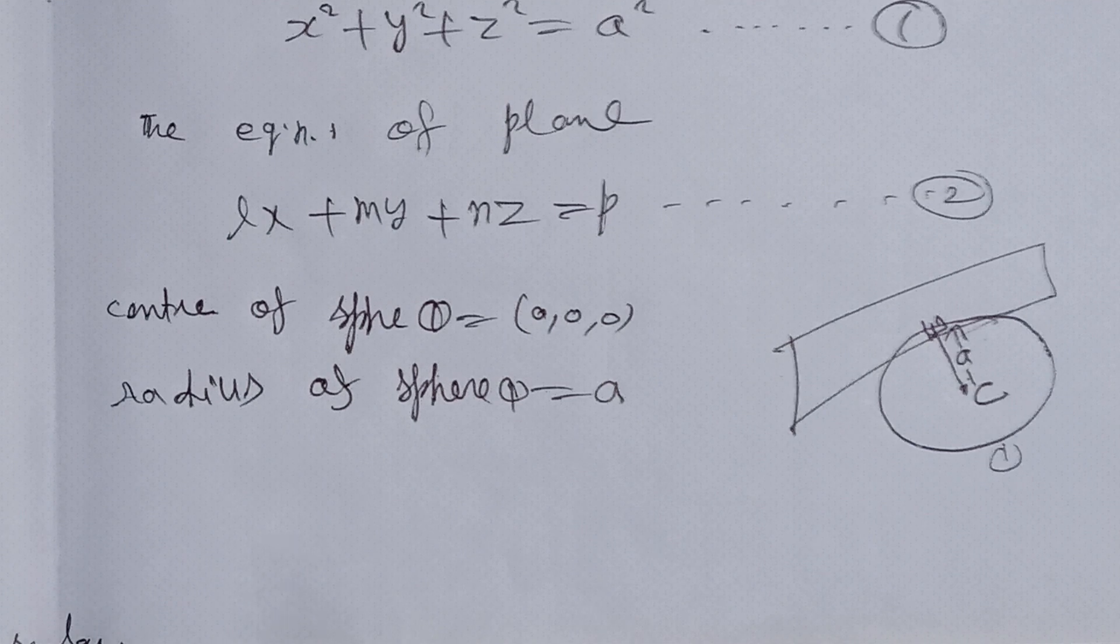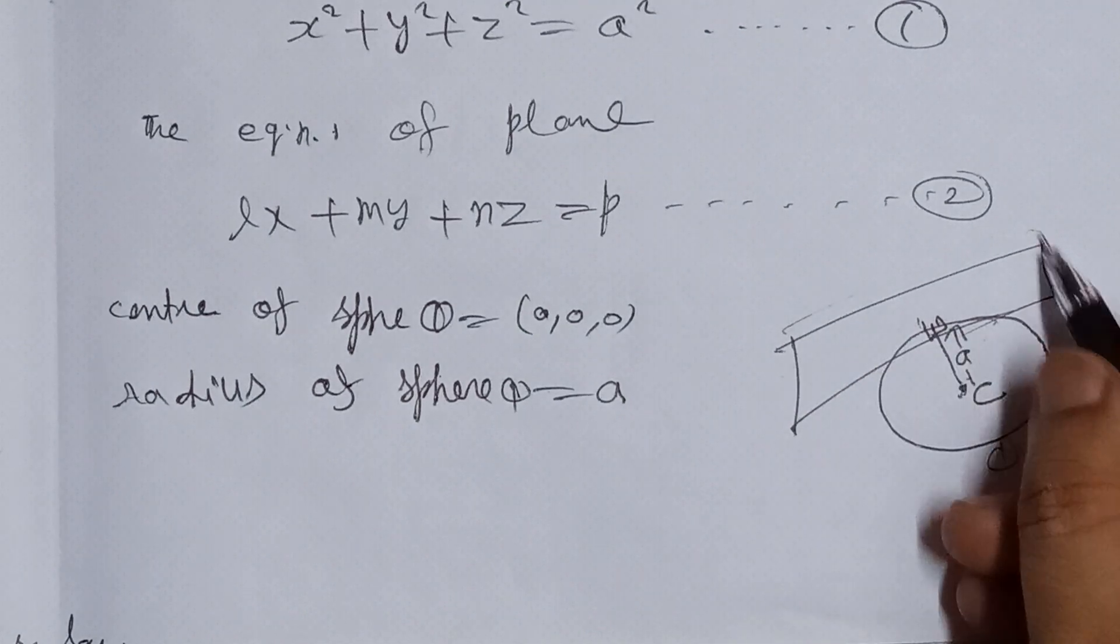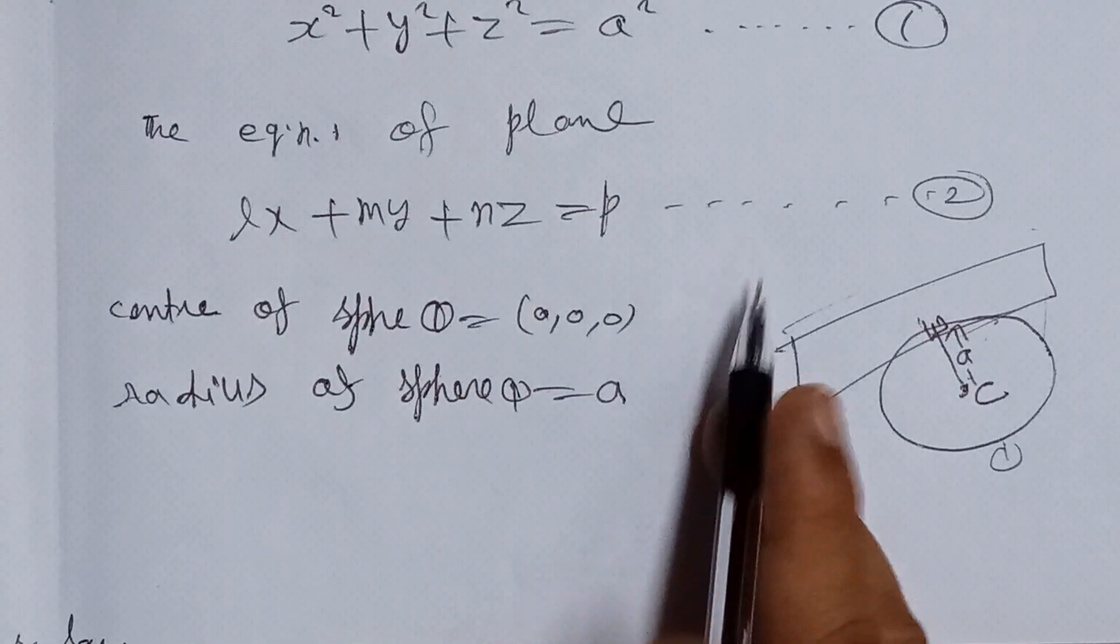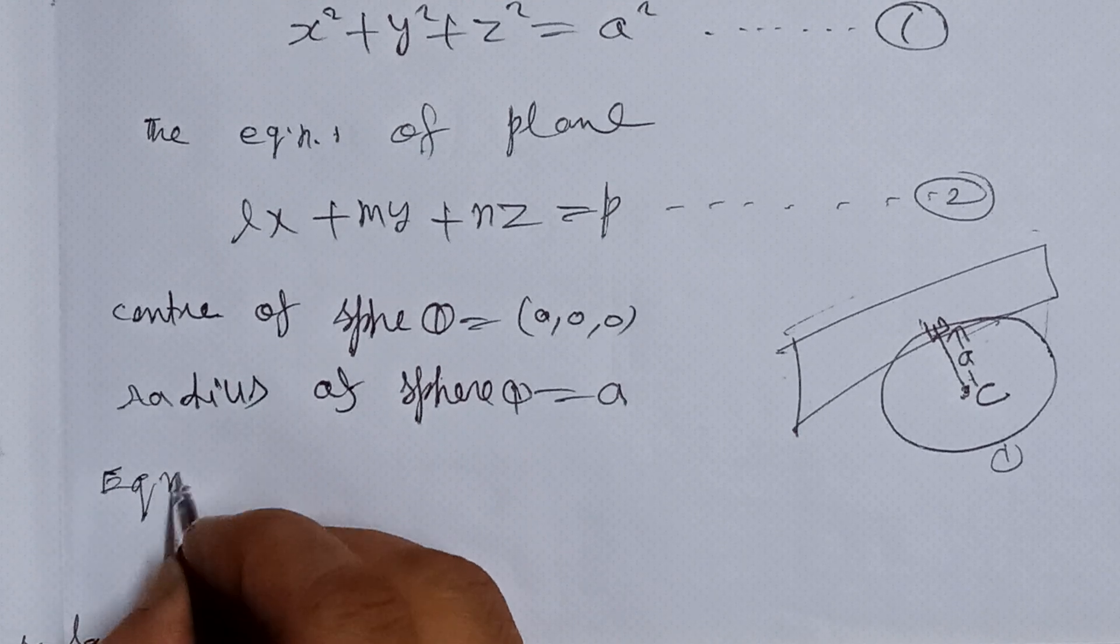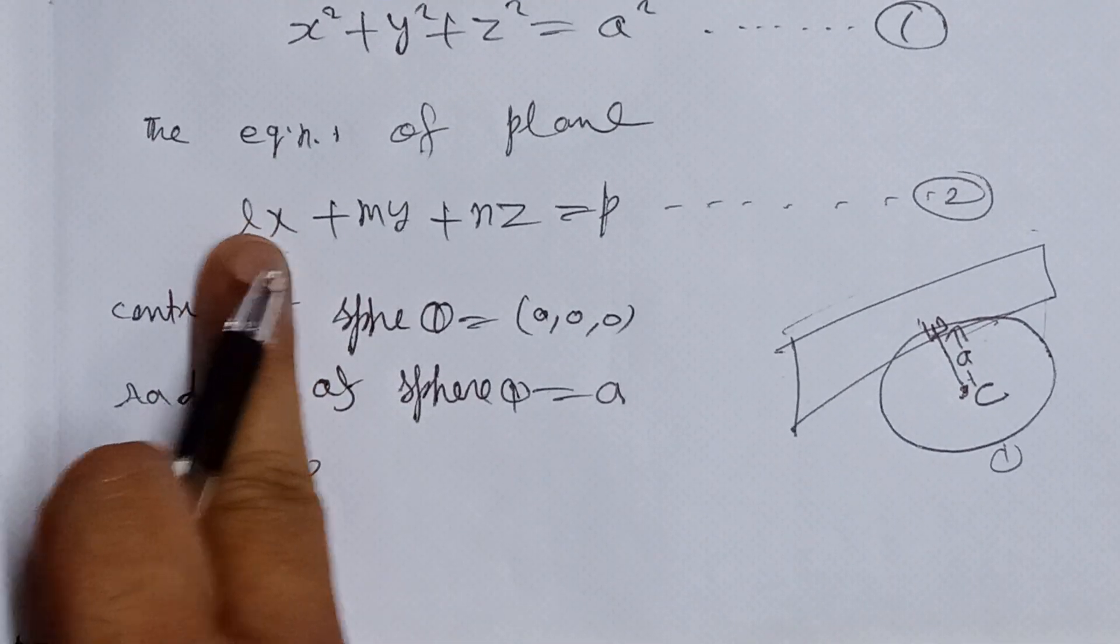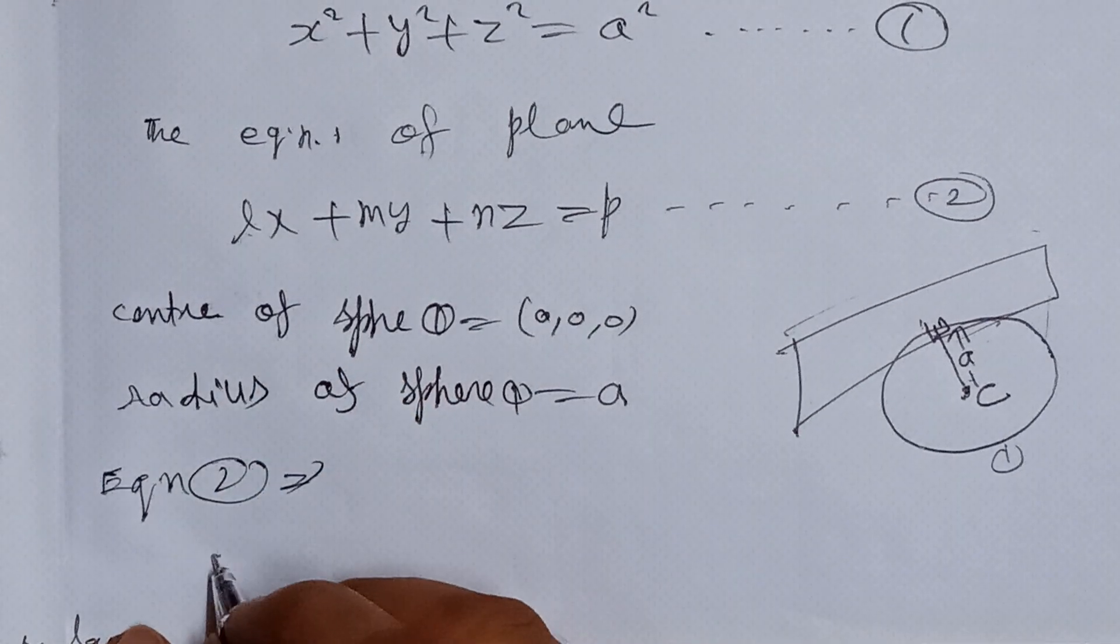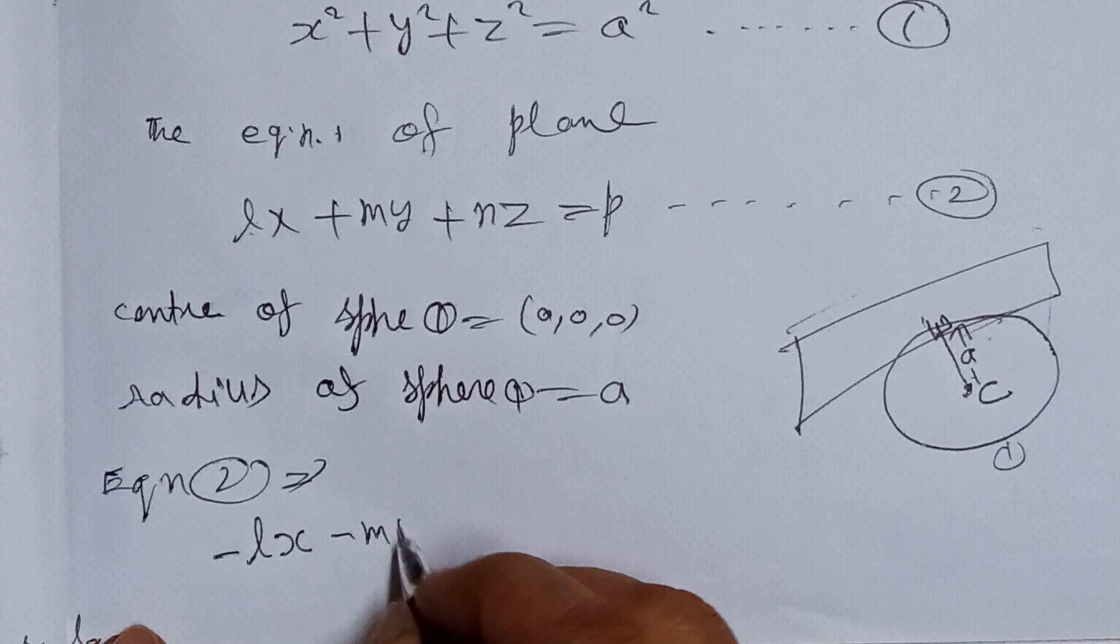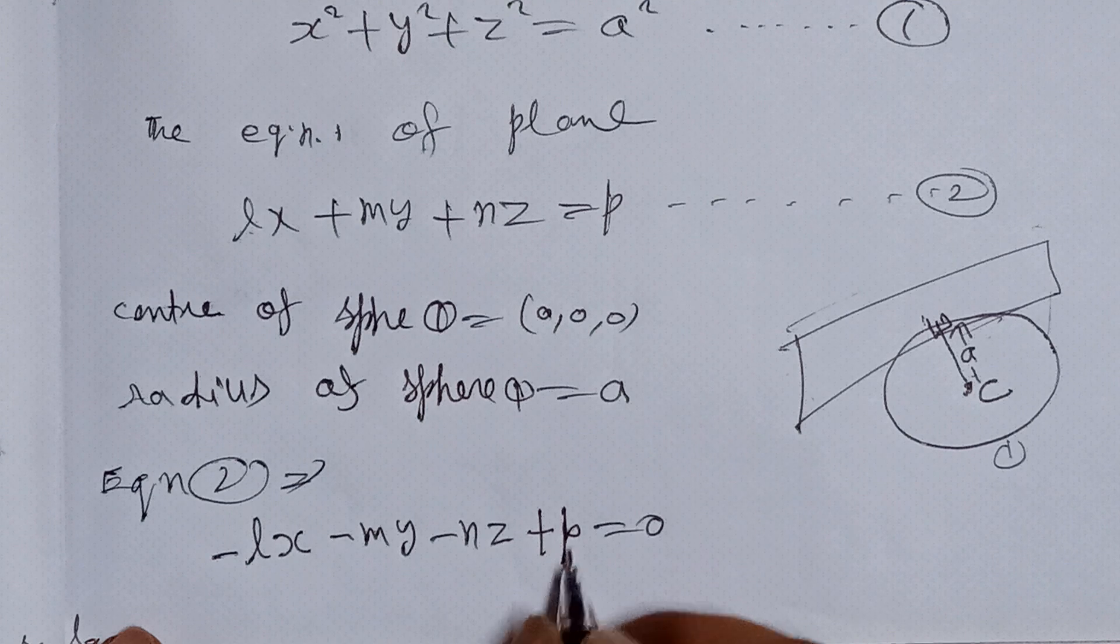Now we have to find the perpendicular distance from center to the plane. First we write this plane in the standard form. I transpose the terms to the right hand side, then the sign will change to minus. Therefore we get -lx - my - nz + p = 0.